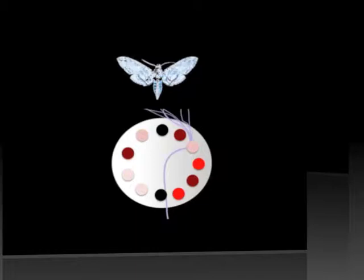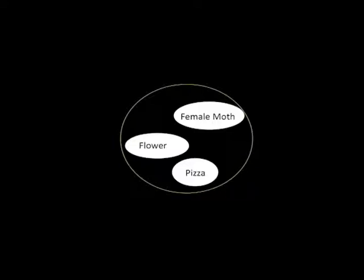So effectively, the antenna lobe acts like an odor encoder, coding distinct scents into distinct neural codes.